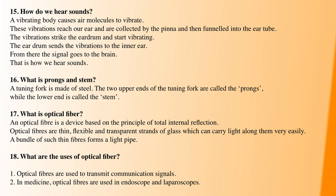Next question: how do we hear sounds? First, a vibrating body causes air molecules to vibrate. These vibrations travel through the air and reach the external ear through the ear tube. The vibrations then strike the eardrum, and the inner ear sends the information to the brain. This is how the ear functions.